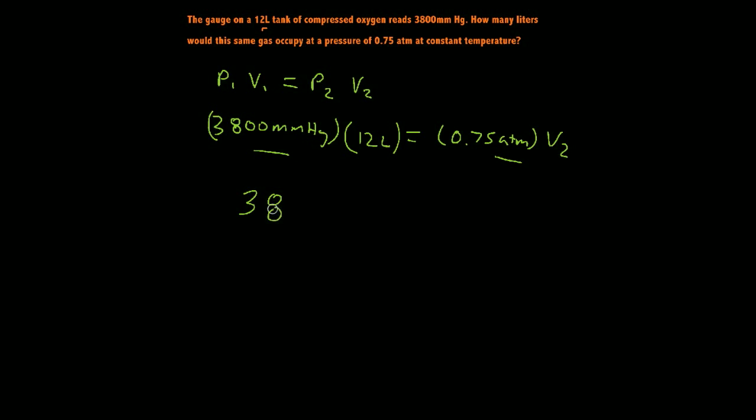So we have 3,800 millimeters of mercury, and we need to multiply this by some type of conversion factor to where I know for every one ATM I have how many millimeters of mercury. And the conversion factor,